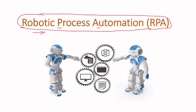Before starting the journey, every student should know what would be the outcome of this course — what the student will actually learn. This is what we need to address first. The first outcome of the course titled Robotic Process Automation is that the student will be aware of a new technology called RPA technology.